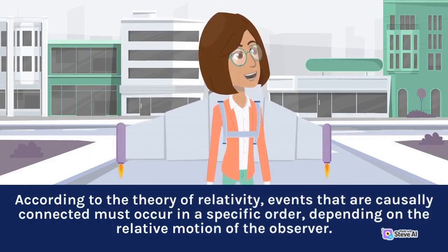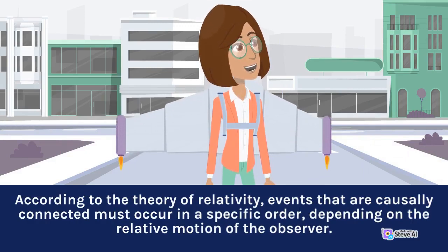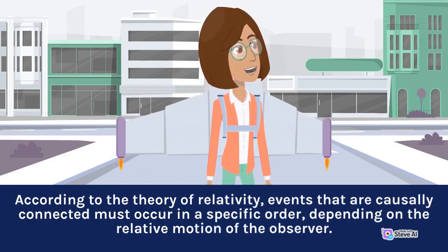According to the theory of relativity, events that are causally connected must occur in a specific order, depending on the relative motion of the observer.